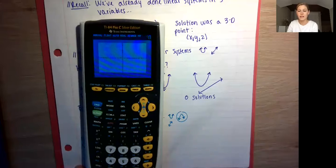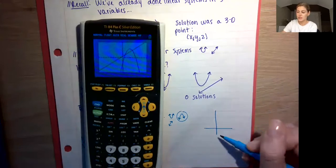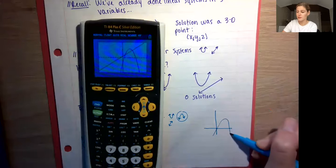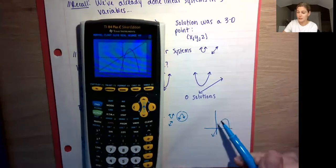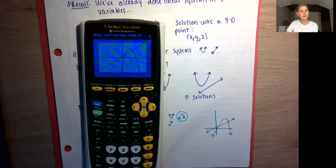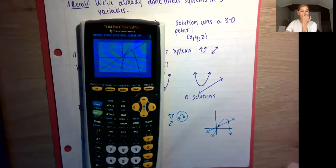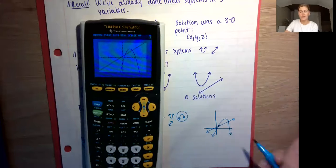Any time you solve something graphically, make a sketch of the graph. We have a parabola and our line. How many solutions does it look like we have? It looks like we have one right about there and one right about there. So now we need to find what these points are where the parabola and line intersect. We go to second, calc, intersect, enter.